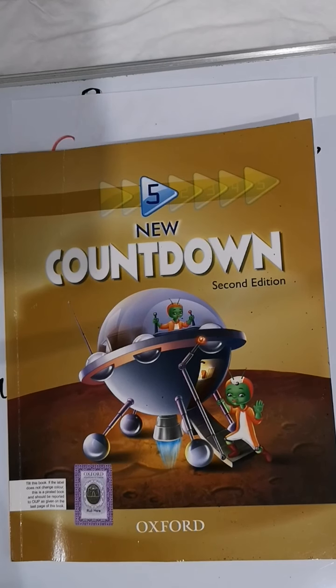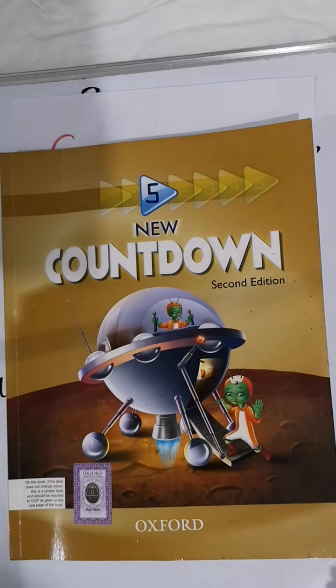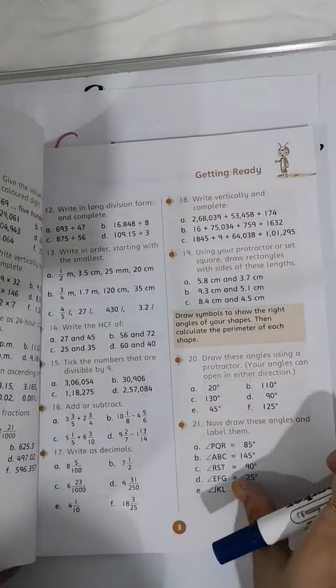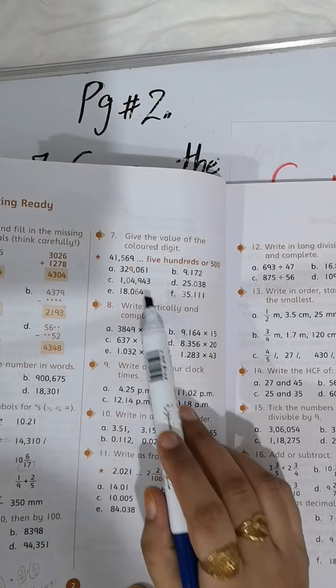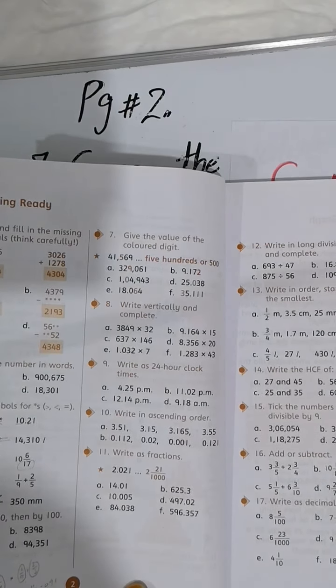Bismillahirrahmanirrahim, Assalamu Alaikum. In this video we will do question number 7, page number 2 of book Countdown Five. The question is: give the value of the colored digit. Here they give us six parts a, b, c, d, e, f. We are going to start.